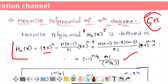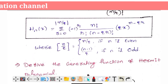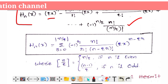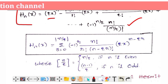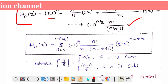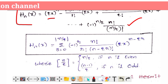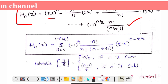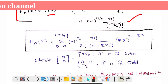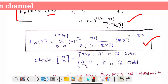H_n(x) equals the summation of r equals 0 to floor(n/2), of (−1)^r times n factorial divided by r factorial times (n−2r) factorial, times (2x)^(n−2r). Here r will take values 0, 1, 2, 3 and n/2 will be replaced accordingly.